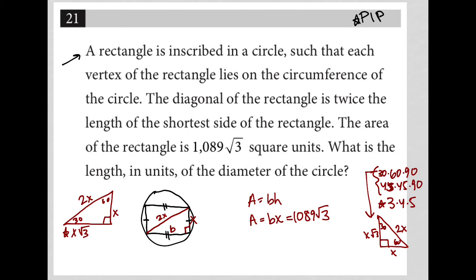So I'm not going to use B for base anymore. I'm going to use X root 3. So I'm gonna say area is equal to the base which is X root 3 times the height which is X, which we know is equal to 1089 root 3.